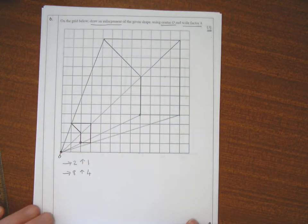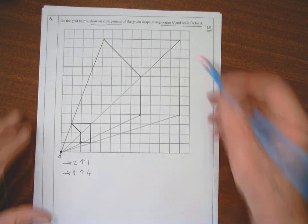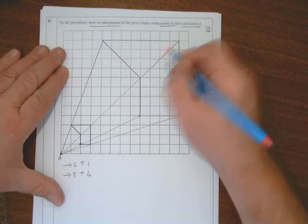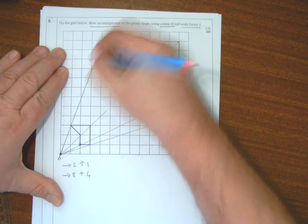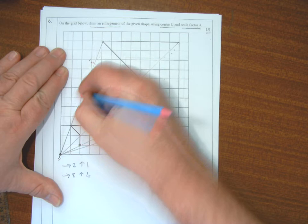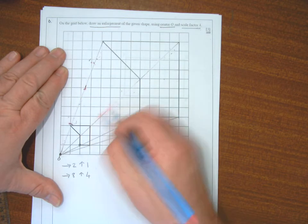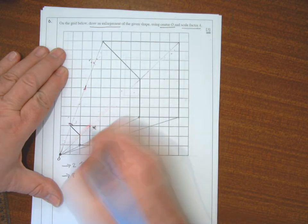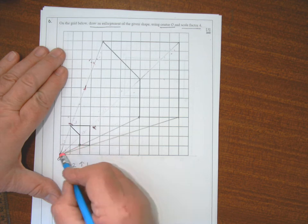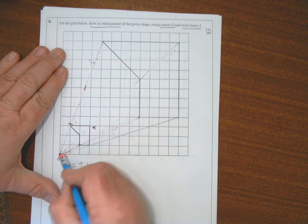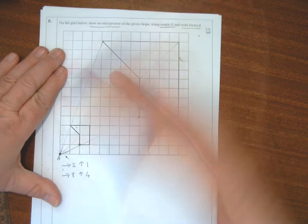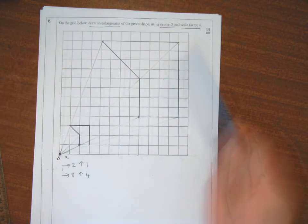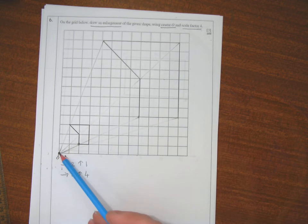Now by putting those lines in, obviously I've confused what the shape was, so I'll just take them back out again. That's a check, if you like, in your final answer. If you've drawn the shape in the right position, they'll all come through.